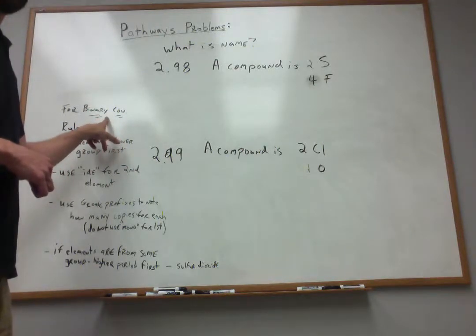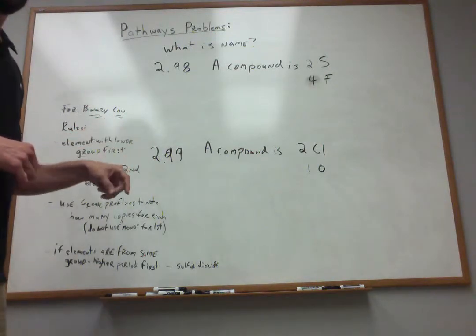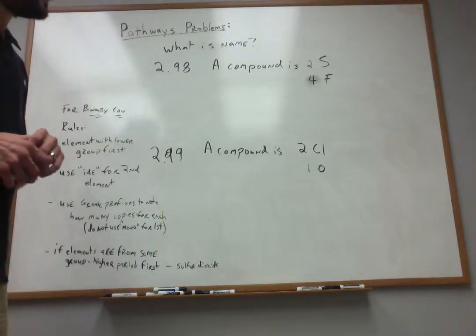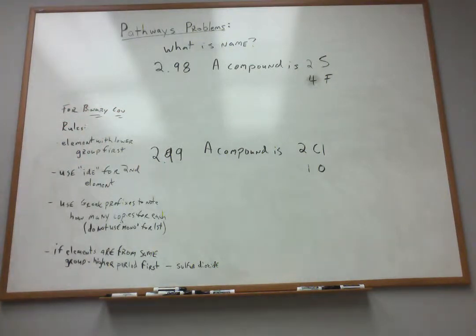They're binary covalent compounds, meaning they're made up of two elements, hence binary. There's a series of rules for naming these types of compounds. These rules are different than the ionic compounds. So when you're naming things, you always need to start by asking, is it ionic? Is it covalent? What am I dealing with here?